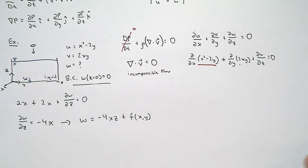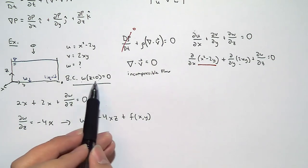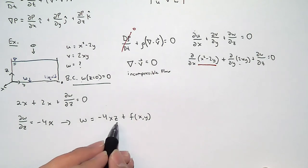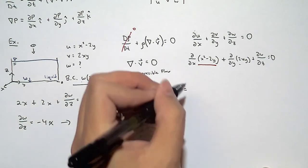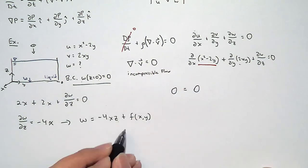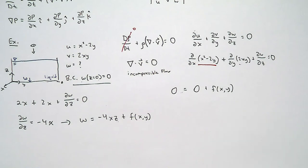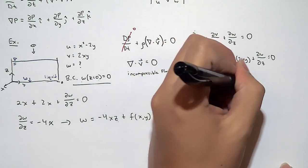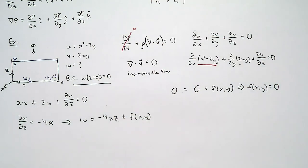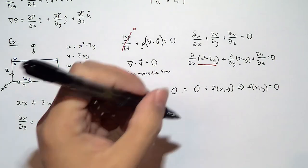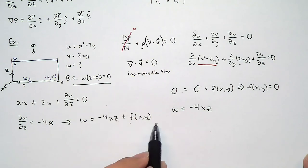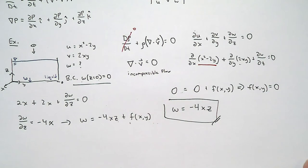Applying the boundary condition: when z = 0, W = 0. Substituting: 0 = −4x(0) + f(x, y), which gives f(x, y) = 0. That means there is no variation with respect to x and y in that function. So our z-component of the velocity field is W = −4xz. That's how we use the continuity equation to solve for an unknown component of the velocity field of a fluid.